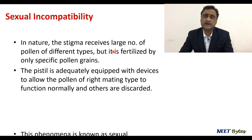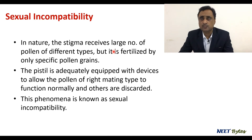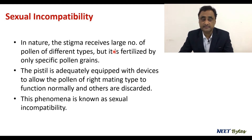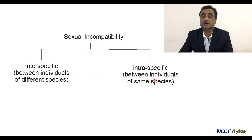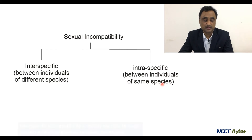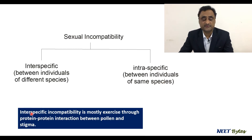There are two types of sexual incompatibility. One is what we call interspecies, and the second is what we call intraspecies. In the case of interspecies, incompatibility occurs between individuals of different species. In the case of intraspecies, it occurs between individuals of the same species or different varieties, ensuring cross-pollination. Interspecific incompatibility is mostly exercised through protein-protein interaction, and we will mainly focus on intraspecific incompatibility.